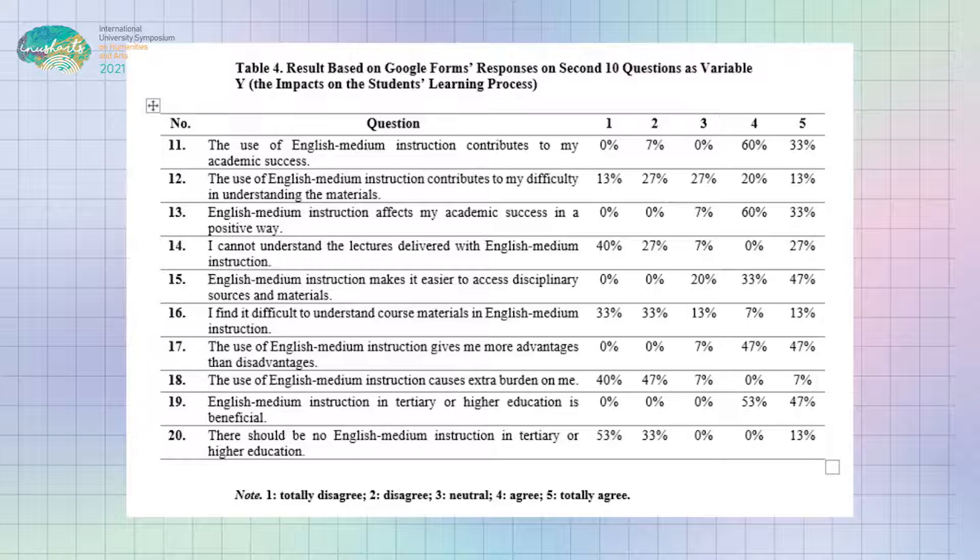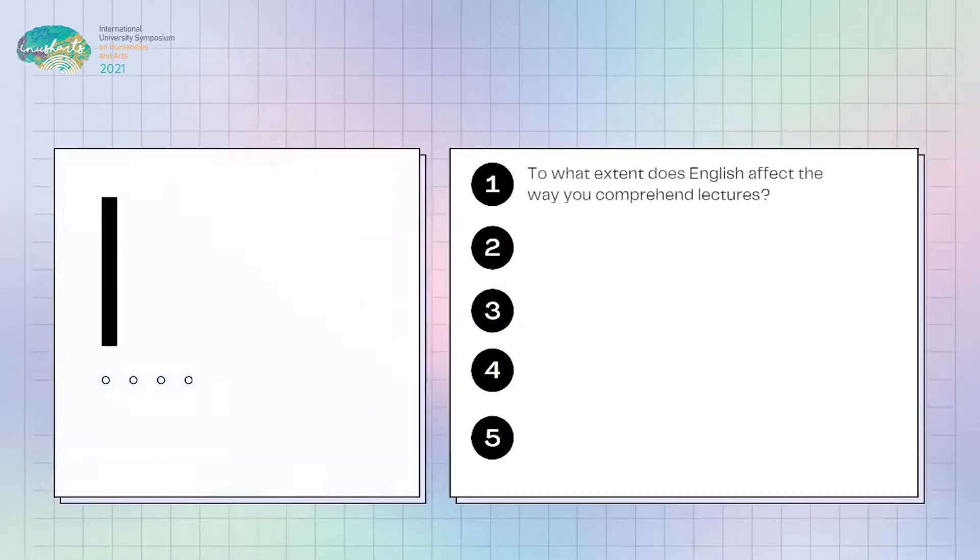Question 19 was asked to obtain the general views that could lead to the conclusion of the findings. Table 4 shows that the largest number of the respondents approved that EMI in tertiary or higher education was beneficial for them. The responses to question 20 were quite in line with the responses to the previous question.